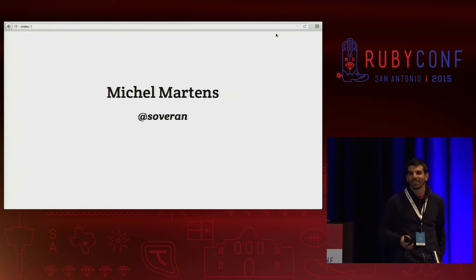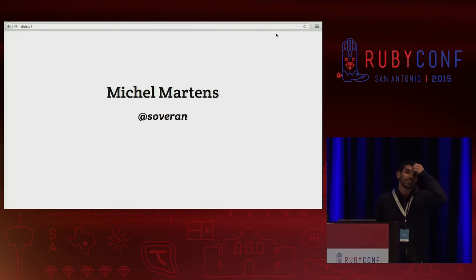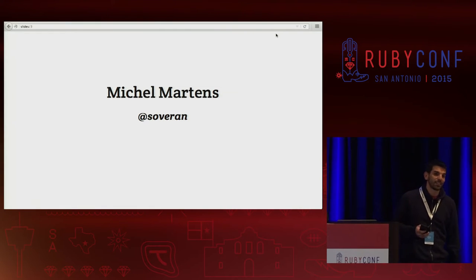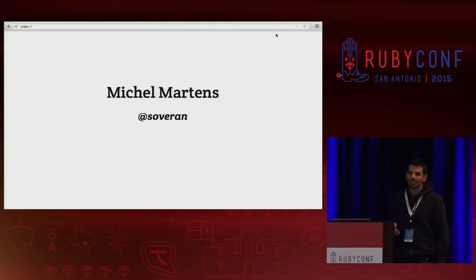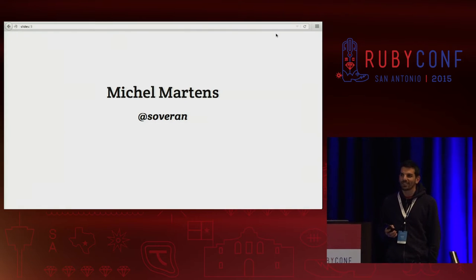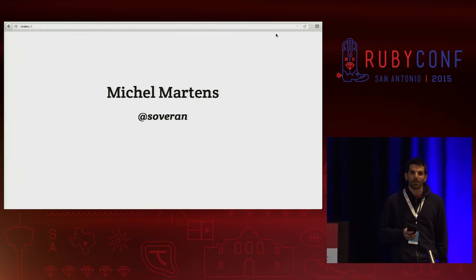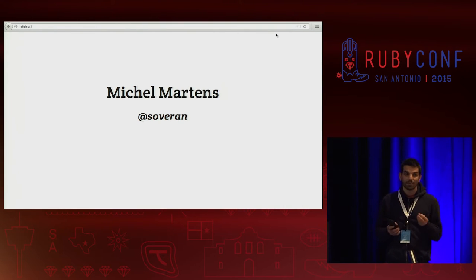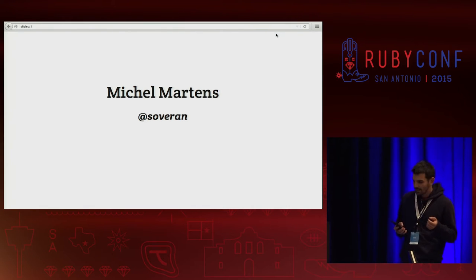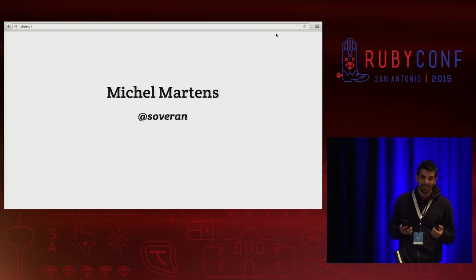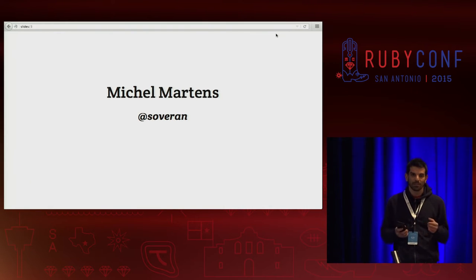Hello. Hi. My name is Michel Martens. I'm from Argentina. I've been using Ruby since 2003, and at the time there were no big Ruby libraries like Rails, RSpec, or Bundler. At that time it was all about small libraries that highlighted how expressive Ruby is. And I think that created a big impact in me because I tried to always create small tools that solve very specific problems with little code.